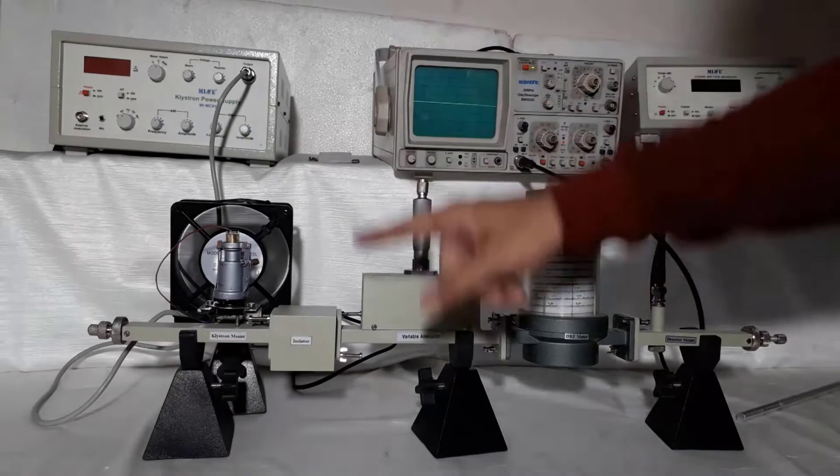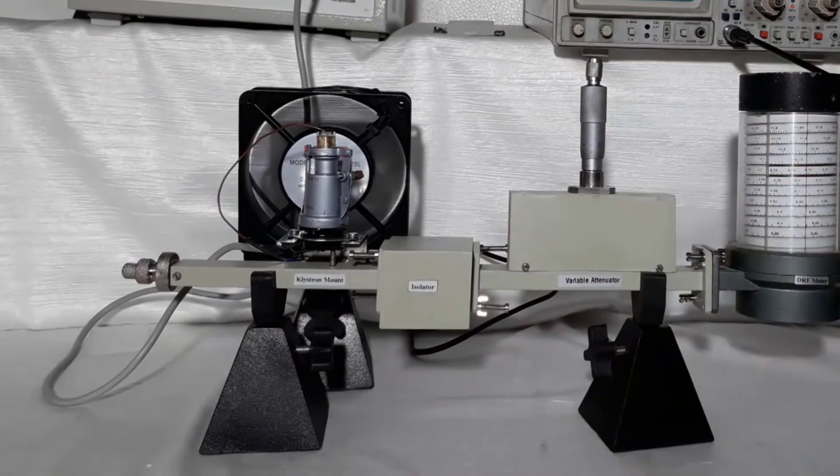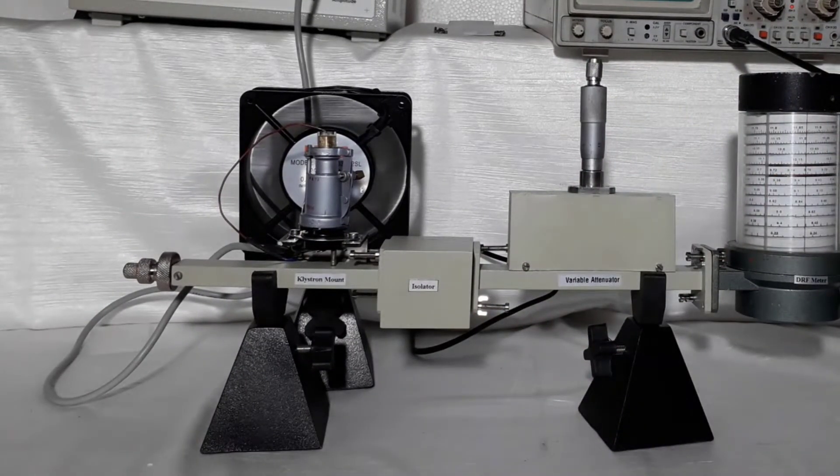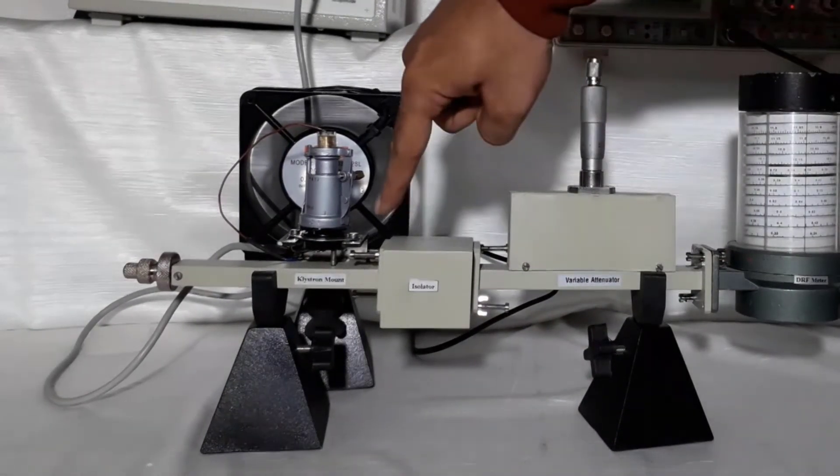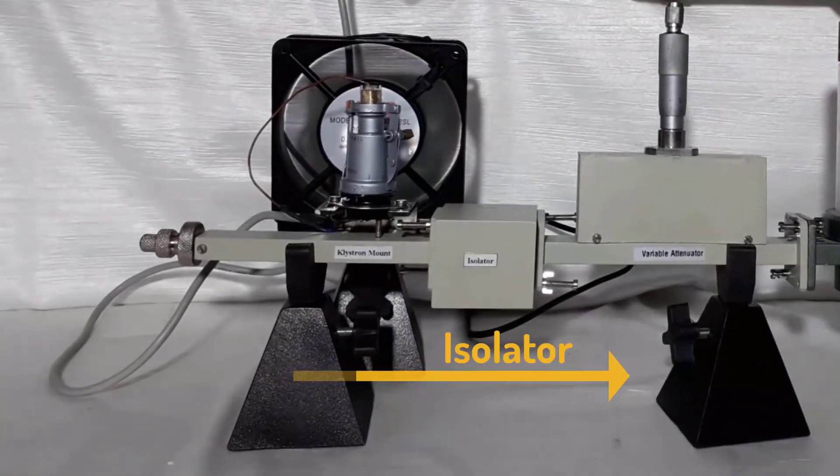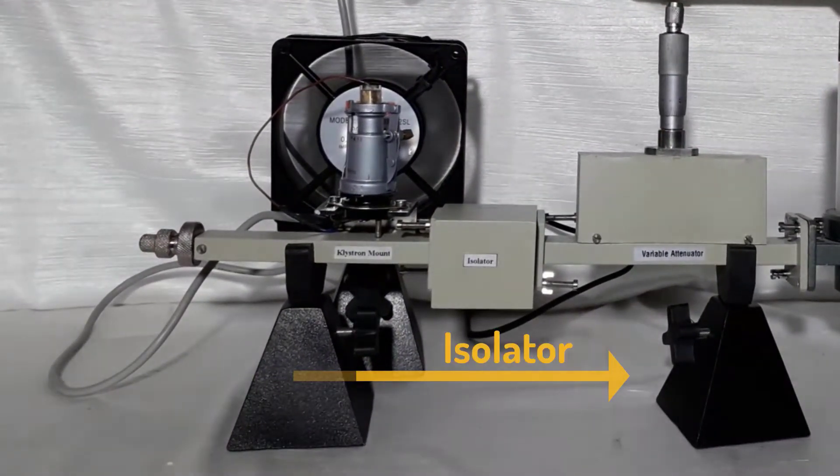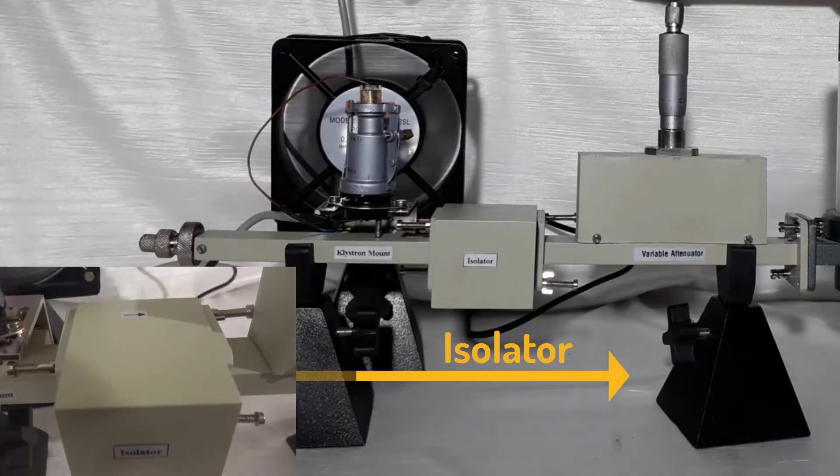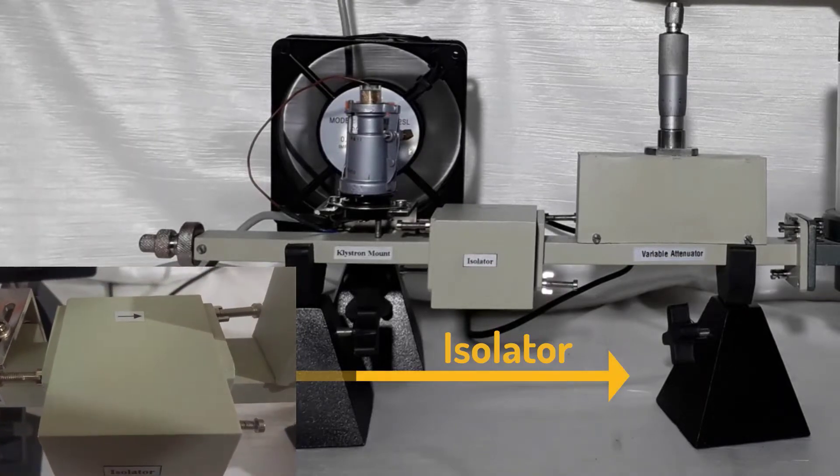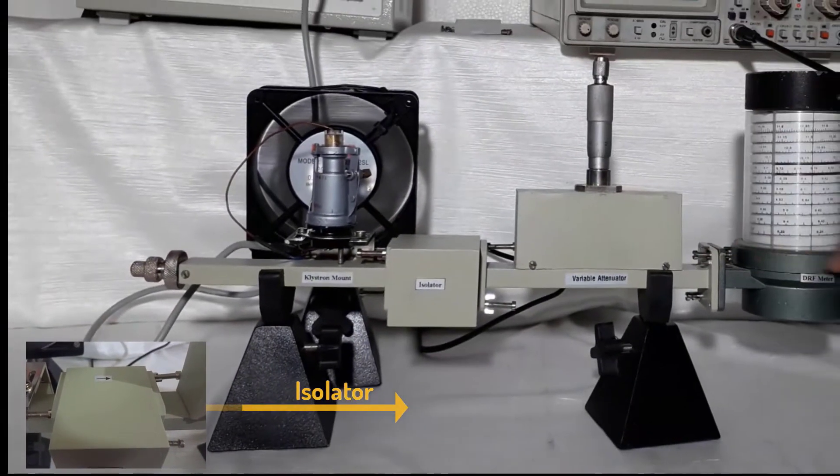After the klystron mount, an isolator is connected in the test bench. The function of the isolator is to pass all microwave signal in one direction only. Arrow sign on the isolator indicates the direction in which microwave signal travels.